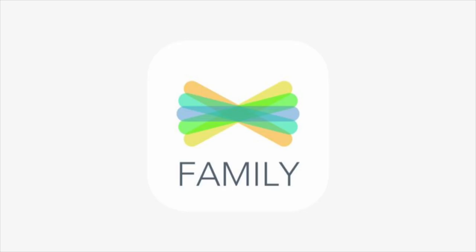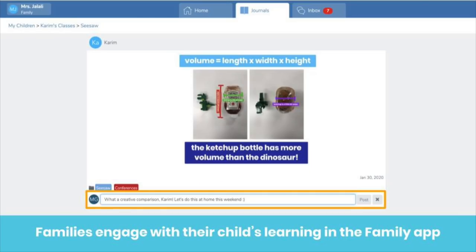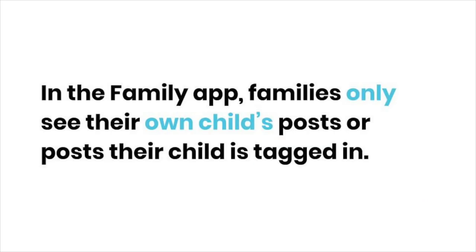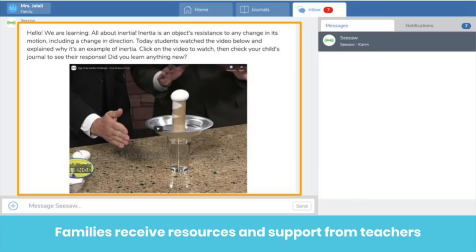The Family app is for families. Here's a family member's view in the Family app. Right now we're looking at the Journal tab. Connected family members can see their child's posts and engage with them. Families can like or leave a comment of encouragement on a post, like you see here. You can control these engagement settings in class settings — that's the wrench icon. Seesaw takes privacy seriously: connected family members only see their own child's posts and posts their child is tagged in.